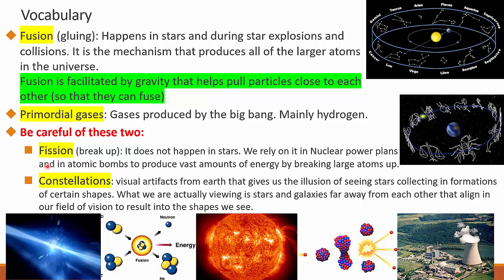Another term that you need to be careful about is what we call constellations. Constellations are not a real thing in space. They are visual artifacts from Earth that gives us the illusion of seeing stars collecting in some formations of certain shapes. If we go to the surface of the moon or if you go to Mars, you are not going to see the same shapes as you see here. What we are actually viewing are stars and galaxies far away from each other that align in our field of vision to result in these shapes.